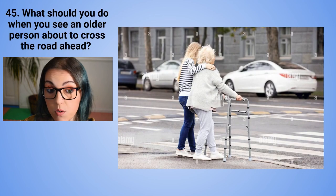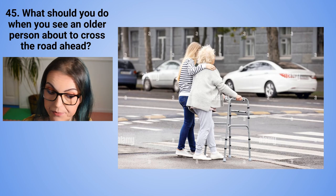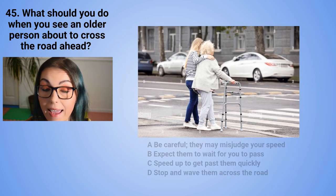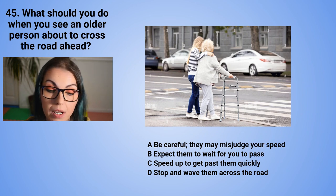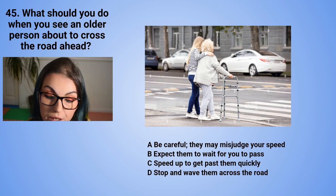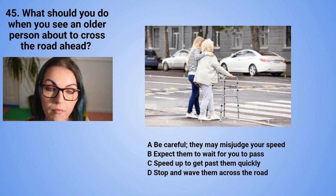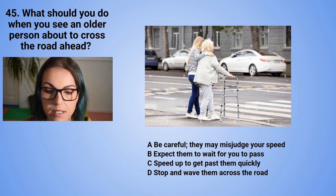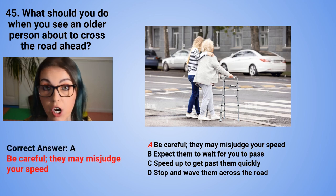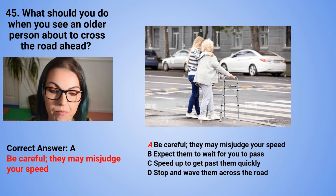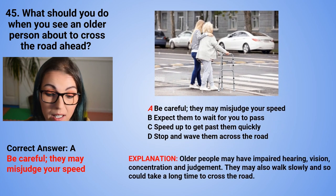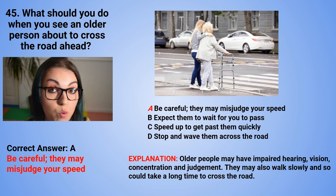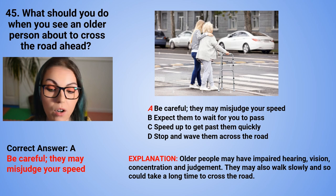Question 45: What should you do when you see an older person about to cross the road ahead? A. Be careful — they may misjudge your speed. B. Expect them to wait for you to pass. C. Speed up to get past them quickly. Or D. Stop and wave them across the road. The correct answer is A — be careful, they may misjudge your speed. Older people may have impaired hearing, vision, concentration, and judgment. They may also walk slowly and could take a long time to cross the road.